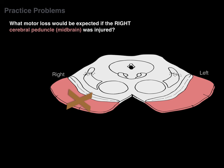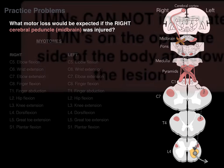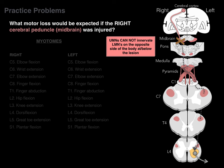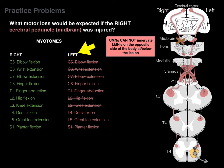Second practice problem: What motor loss would be expected if the right cerebral peduncle of the midbrain were injured? There is the lesion — the upper motor neuron comes down and gets stopped. Everything downstream on the contralateral side at every segmental level is affected. Upper motor neurons cannot innervate lower motor neurons on the opposite side of the body at and below the level of the lesion. On the left side, the entire upper and lower motor neuron are unaffected, so muscles on the right side of the body would be okay.